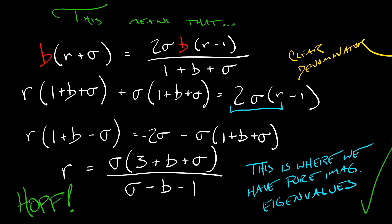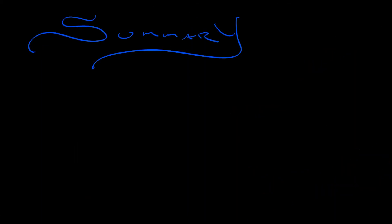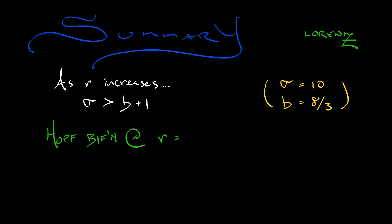So let's summarize what we have found for Lorenz. As we take this parameter r and increase it, then what do we get? Well, we want sigma to be bigger than b plus one. But at the classical values where sigma is 10, b equals eight thirds, that's not a problem. Then what we have is a Hopf bifurcation at the parameter value r equals sigma times quantity three plus sigma plus b all divided by sigma minus b minus one. Now this is happening at the two equilibria in this system, those two guys off to the side that came from that supercritical pitchfork. So it's actually kind of a double Hopf bifurcation.